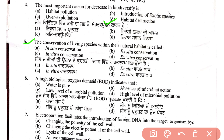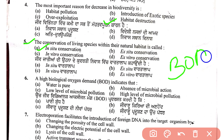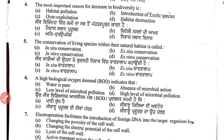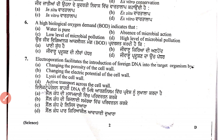Fifth question: conservation of living species within their natural habitat is known as in-situ conservation. Sixth question: high biological oxygen demand indicates high level of microbial pollution in a water body — the more microorganisms, the more pollution.